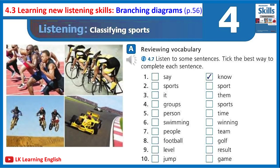8. For example, tennis is an opponent sport, and so is... 9. Finally, there are achievement sports. In achievement sports, you try to reach a certain level. 10. The high jump is an achievement sport, and so is the long jump.